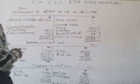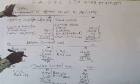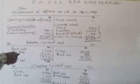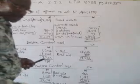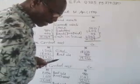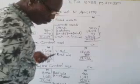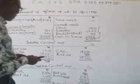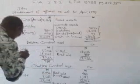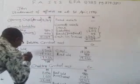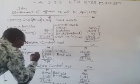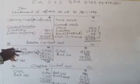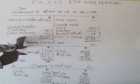That is the first thing you must do under this topic. Then we now move to the debtors control account, as required from the question. This account is prepared so as to derive sales — you want to get sales here, that's why the account is being prepared.